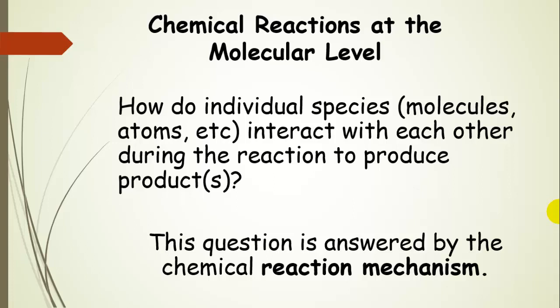Now we're going to start talking about chemical reactions at the molecular level. So basically, how do individual species - and those can be molecules, atoms, ions - interact with each other during the reaction to produce products? We can answer this question with the chemical reaction mechanism. That's what we're going to talk about now.